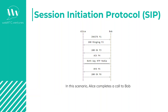Once Bob wants to finish the call, he will press hang up, and this will trigger a BYE message to Alice. Then Alice will also disconnect, and once successfully disconnected from the call, she will send back a 200 OK and the call will be ended.